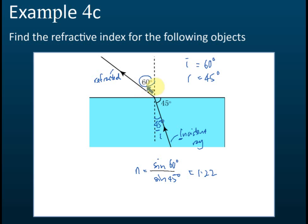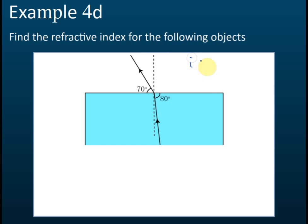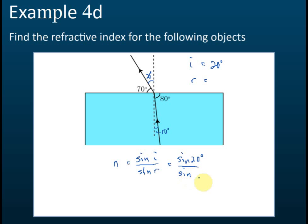Another example: i is always in the air, so no matter which direction the light travels — denser to less dense or less dense to denser — i is always the angle in air. Here i = 20° and r = 10°. So the refractive index n = sine 20° divided by sine 10° = 1.97.